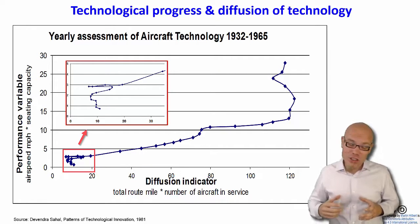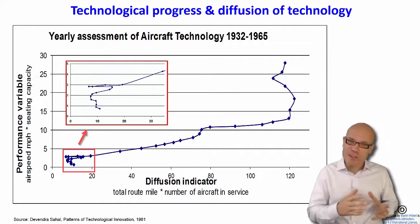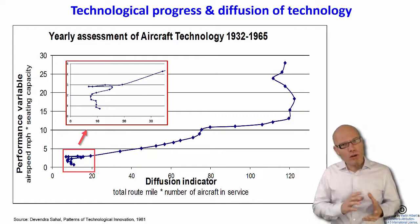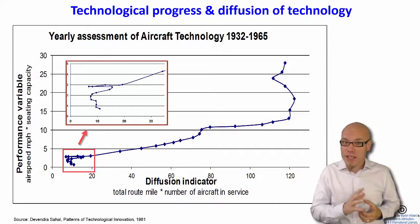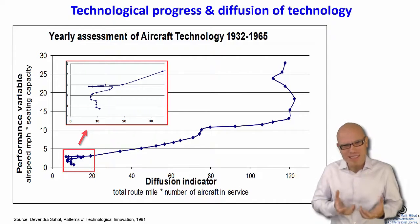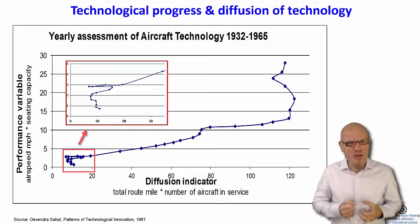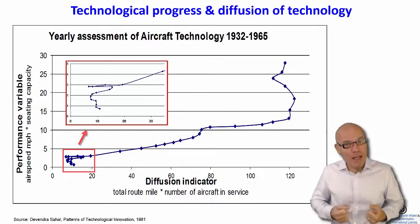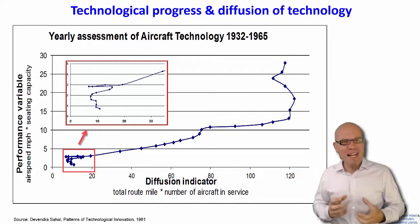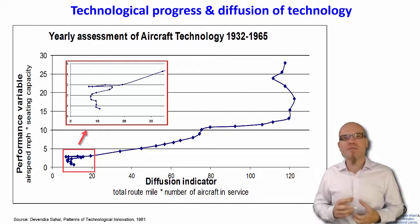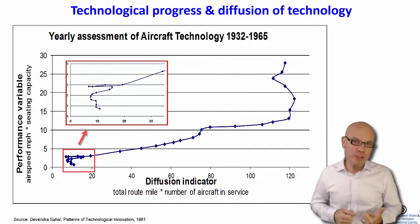It also takes time — technology has to spread through society. At one point, once it doesn't spread so much anymore, either you hit a level of saturation where everybody has it, or things just get boring and it doesn't sell anymore. Then you say again, okay, let's improve it and put a lot into research and development. So you have this alternating process between progress and diffusion.